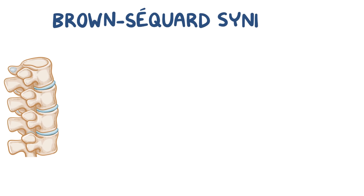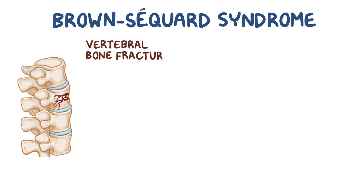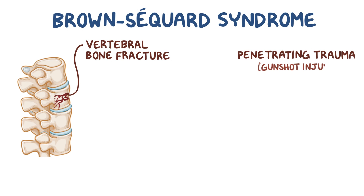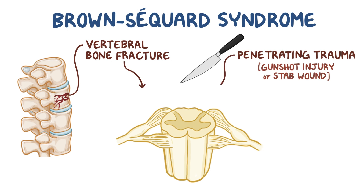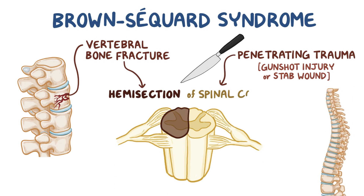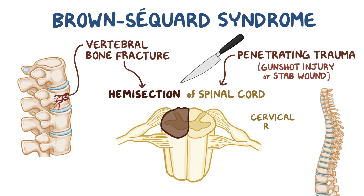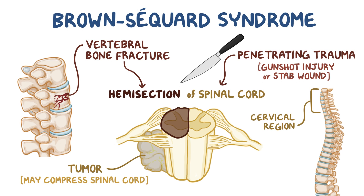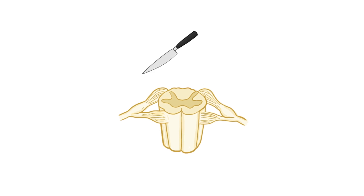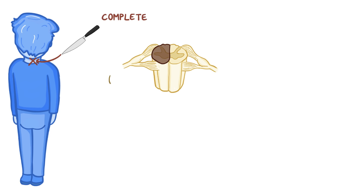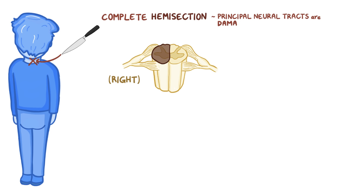In Brown-Séquard syndrome, a vertebral bone fracture or any kind of penetrating trauma like a gunshot injury or stab wound in the back can lead to hemisection of the spinal cord, and this mostly happens in the neck or cervical region. Besides trauma, non-traumatic conditions like a spinal cord tumor might compress the spinal cord and lead to Brown-Séquard syndrome. Suppose a person was stabbed in the neck and had a complete right hemisection of the spinal cord — this means that all the principal neural tracts in the right side of the spinal cord are now damaged.